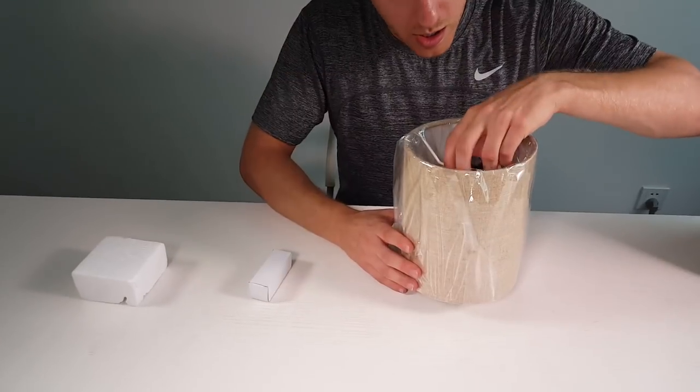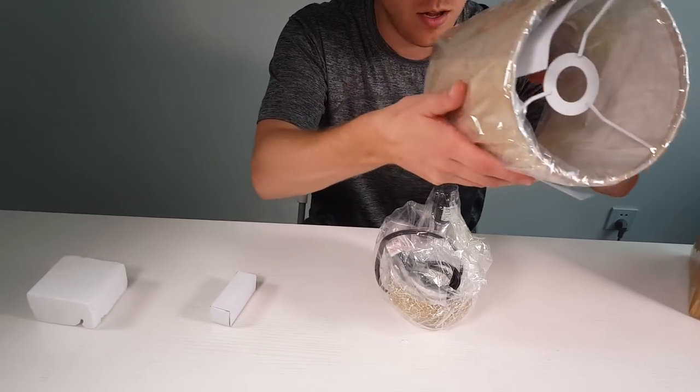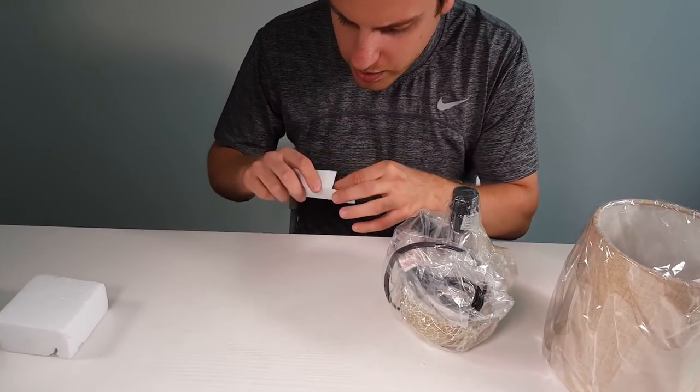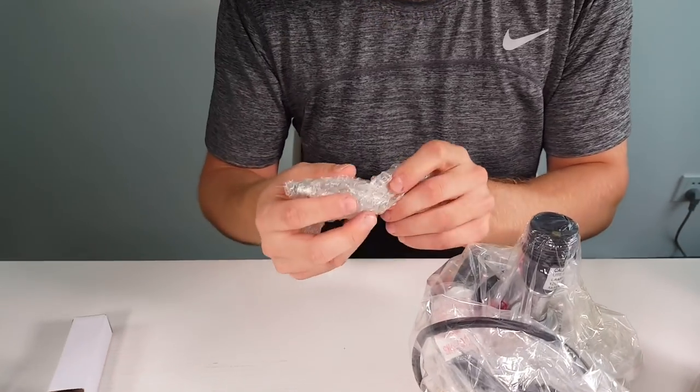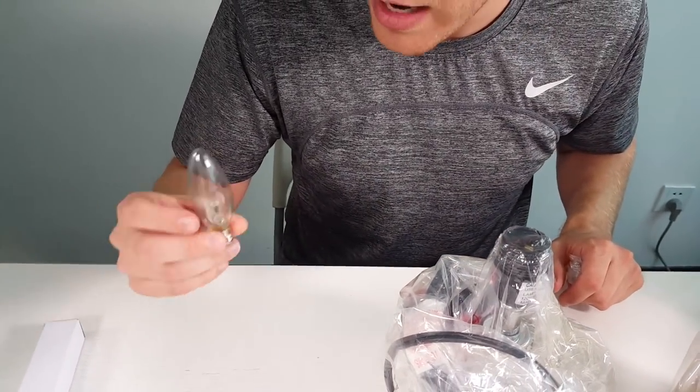We're going to unscrew this and take off the lampshade. First thing you get is a light bulb. This light bulb is included, which is a really nice feature, so you don't actually have to buy your own.